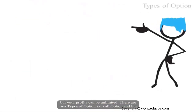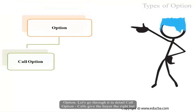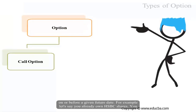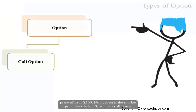There are two types of options: the call option and the put option. A call option gives the buyer the right, but not the obligation, to buy a given quantity of the underlying asset at a given price on or before a given future date. For example, if you want protection in case the price of HSBC rises, you buy a call option — the right to buy at $500. Even if the market price rises to $550, you can still buy it at $500.